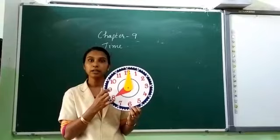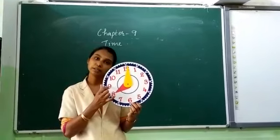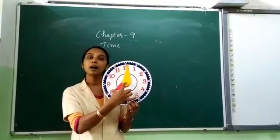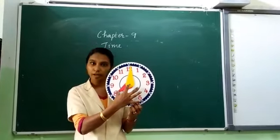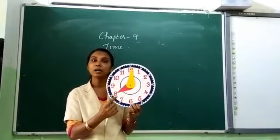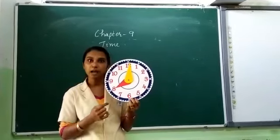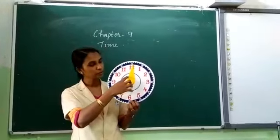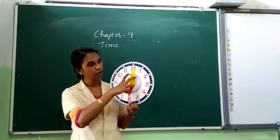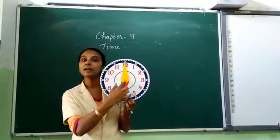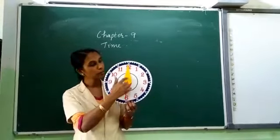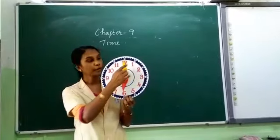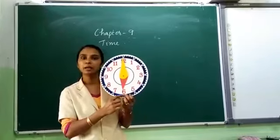These numbers tell us the time in hours and minutes. And here there are 2 hands. There is a short hand — it is the hour hand. For example, when your online class starts, the online class starts at 6 o'clock. This hour hand points to 6 and the minute hand — the long hand — points to 12. It is the time 6 o'clock.